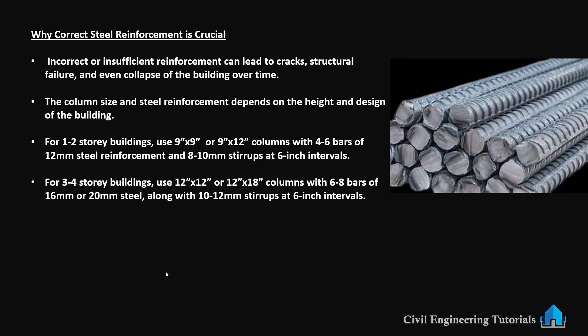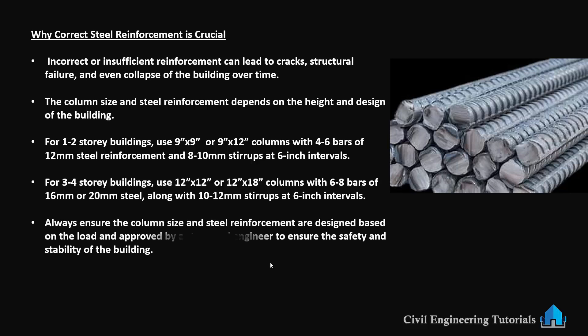Always ensure the column size and steel reinforcement are designed based on the load and approved by a structural engineer to ensure the safety and stability of the building. The column size and steel reinforcement depend on the height and design of your building. For 1 to 2 storey buildings, you can use a 9 inch by 9 inch column with 12 mm steel, while for 3 to 4 storey buildings you will need 12 inch by 12 inch columns with 16 mm or 20 mm steel. The safety of the building depends on proper column sizing and reinforcement. If you are unsure, it's always best to consult a professional structural engineer.